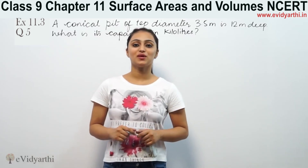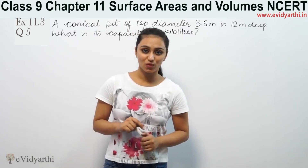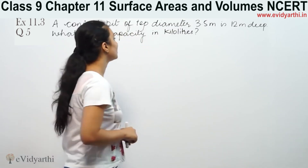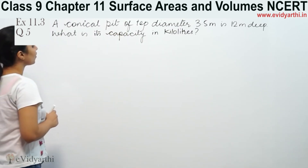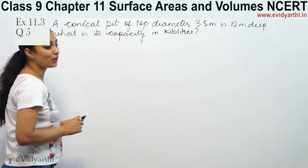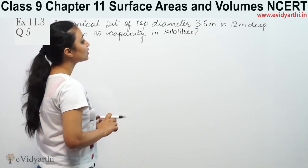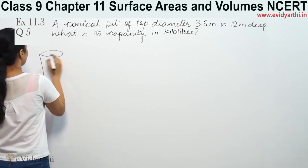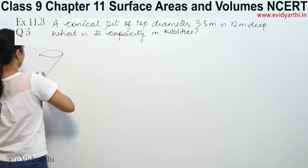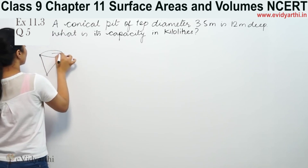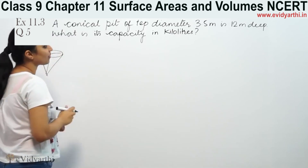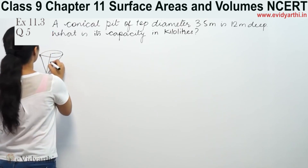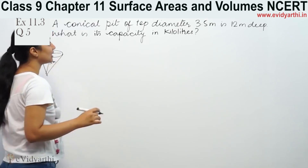Hi, this is Khushku with another question on surface areas and volumes. This is question from exercise 13.7, page 233 from NCERT. It says: a conical pit of top diameter 3.5 meters is 12 meters deep. A conical pit is like this. Its diameter is 3.5 meters, so its radius is 3.5 by 2 meters. And depth is 12 meters. What is its capacity in kiloliters?